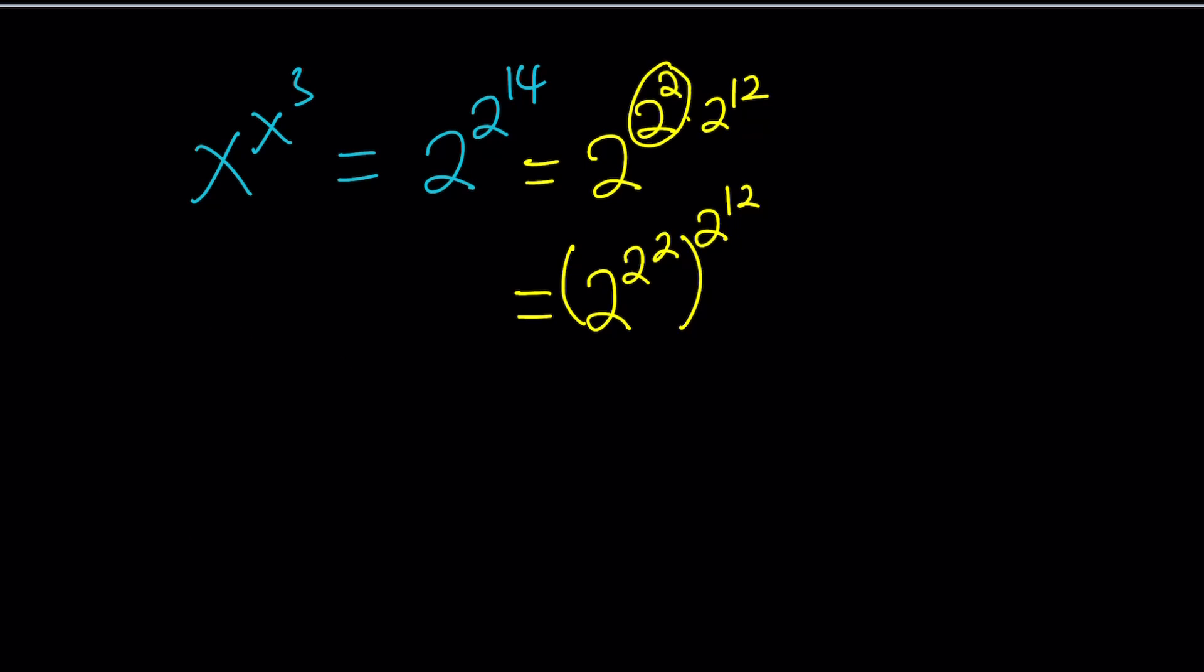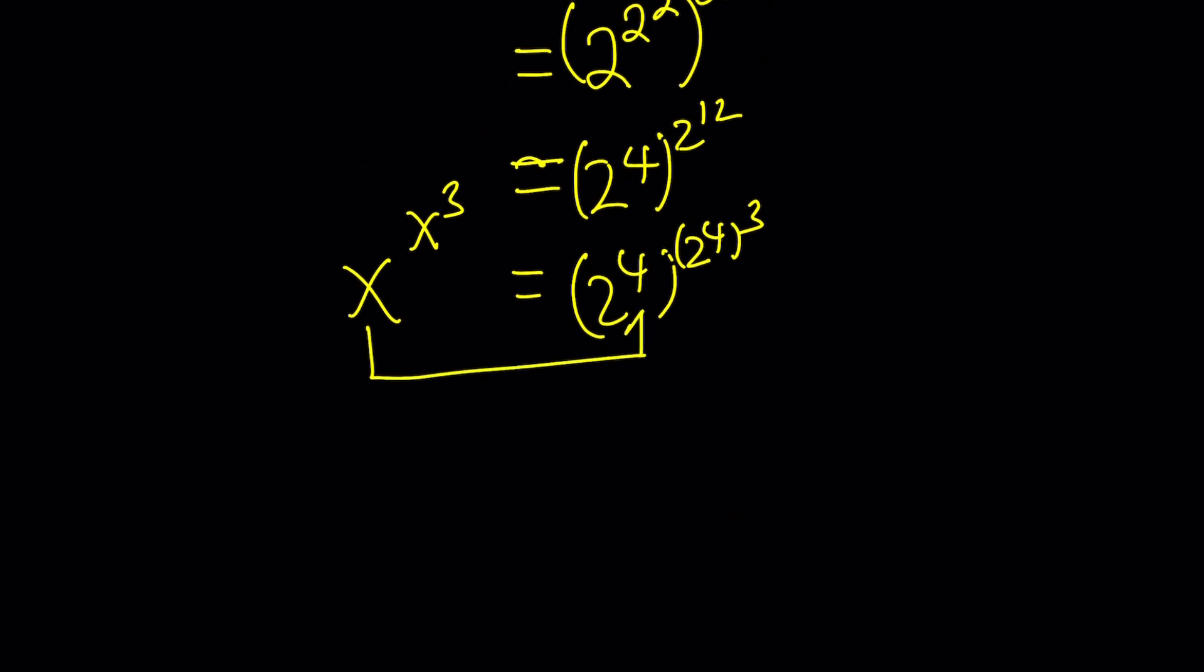Let's see how this works out. Once we did that, we can basically write this as 2 to the 4th power to the power 2 to the power 12, and then 2 to the power 12 is 2 to the 4th cubed. Therefore, now you have the equality you were looking for. x must be 2 to the 4th power, which is 16. Because if x is equal to 16, then x cubed is going to be 16 cubed, and this is going to work. I'm not saying this is the only solution, but it's probably the only solution.